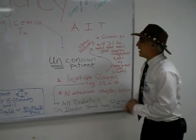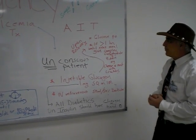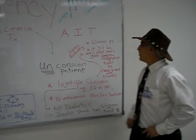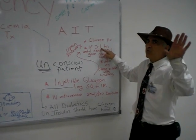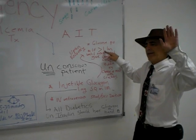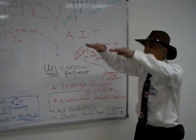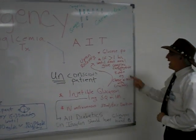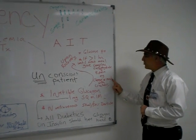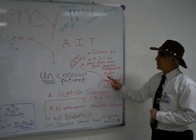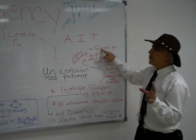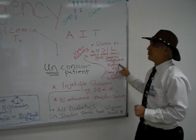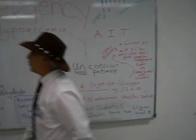Once the unconscious patient recovers, give them some glucose — simple, quick-acting carbohydrates. If the next meal time is greater than one hour away, we need to be concerned that their blood sugar may drop again, so we will give them a complex carbohydrate and a protein. An example would be cheese or meat with crackers.